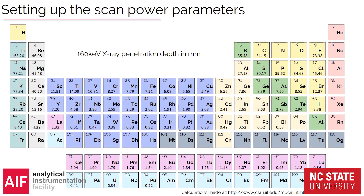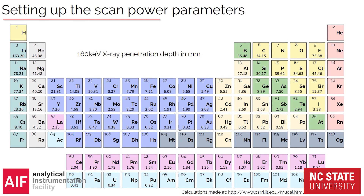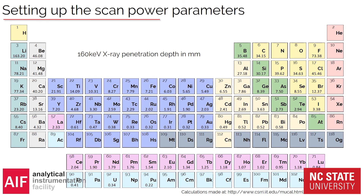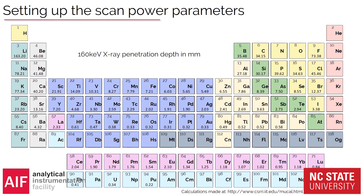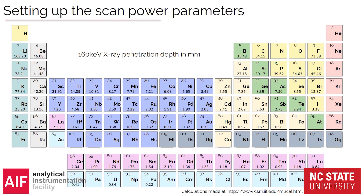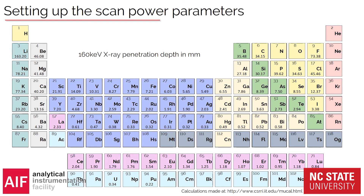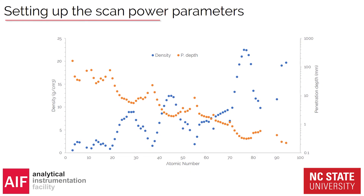Here is a table of typical thicknesses we can get through with our X-Radia system at max power. This is very closely linked to density. For low-density materials like calcium — found in bones — we can get through 40 millimeters of really thick bone. But for high-density metals like copper, we can only get through about five millimeters, and for lead, only about half a millimeter. We can still scan them, but you need to adjust your sample size accordingly. Density and penetration depth are very closely linked.